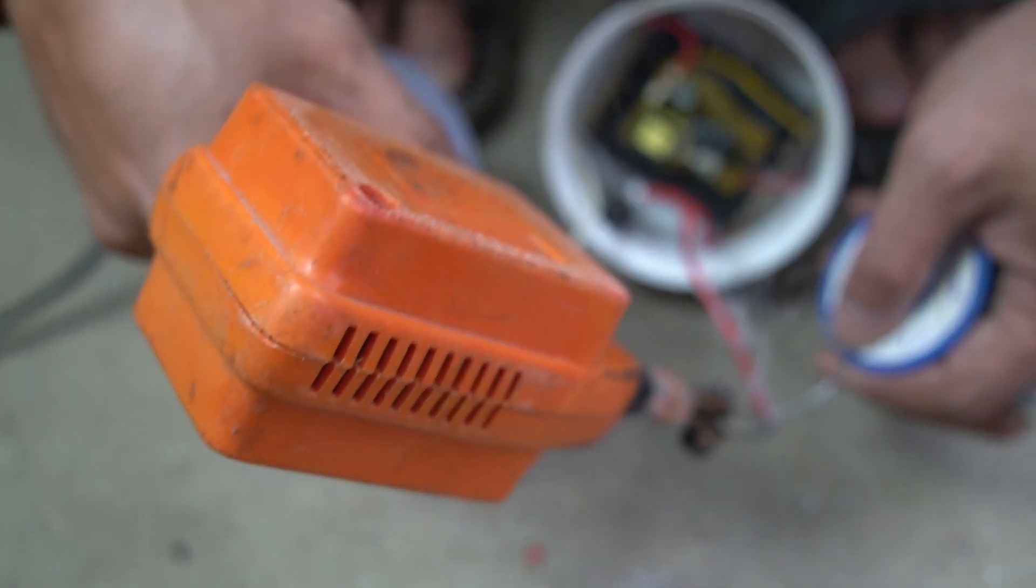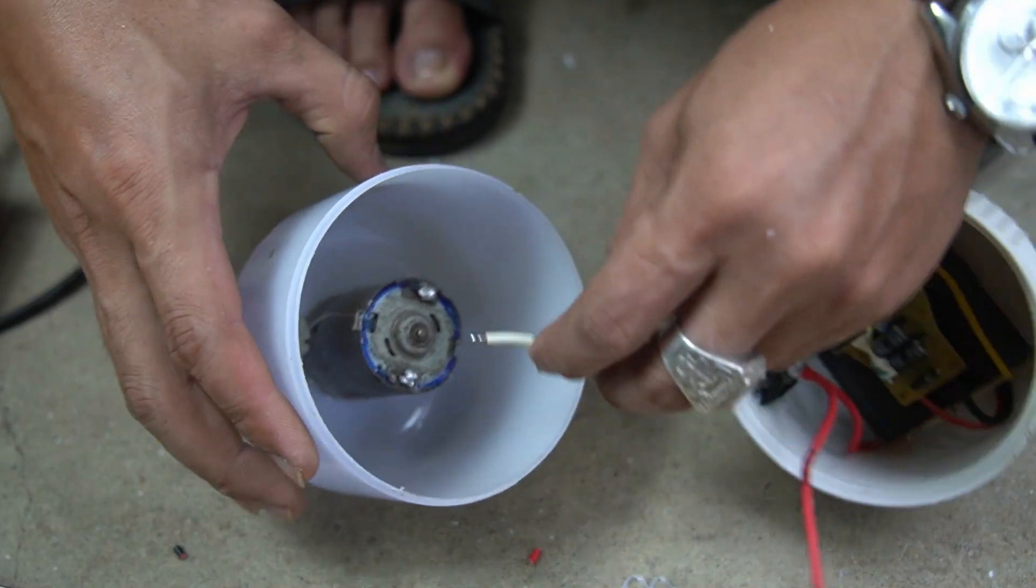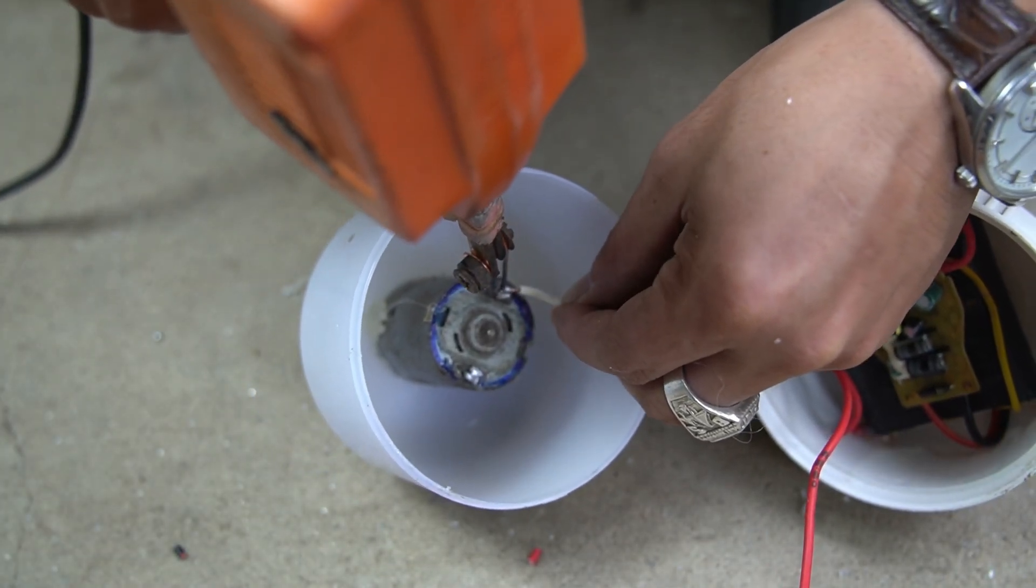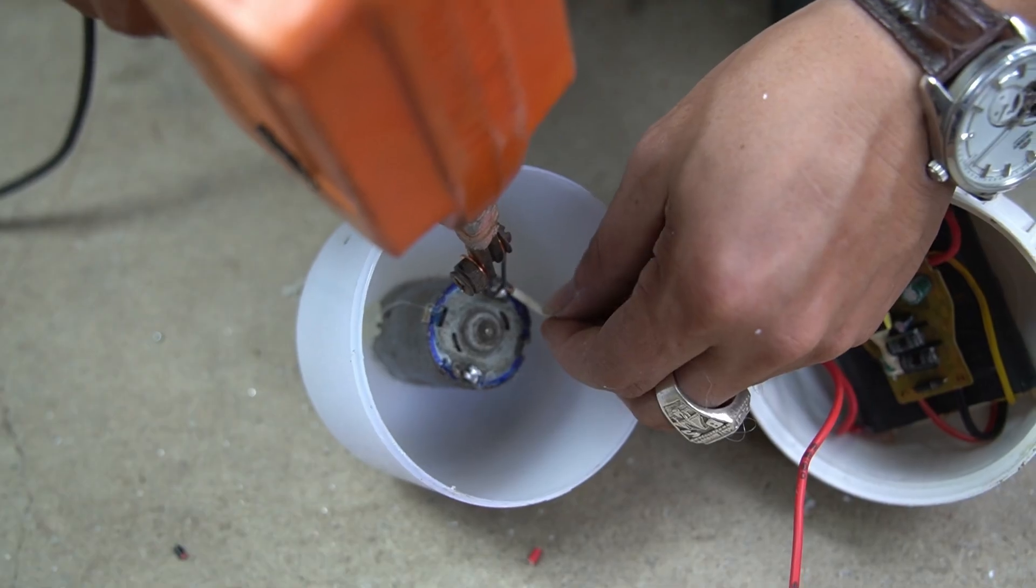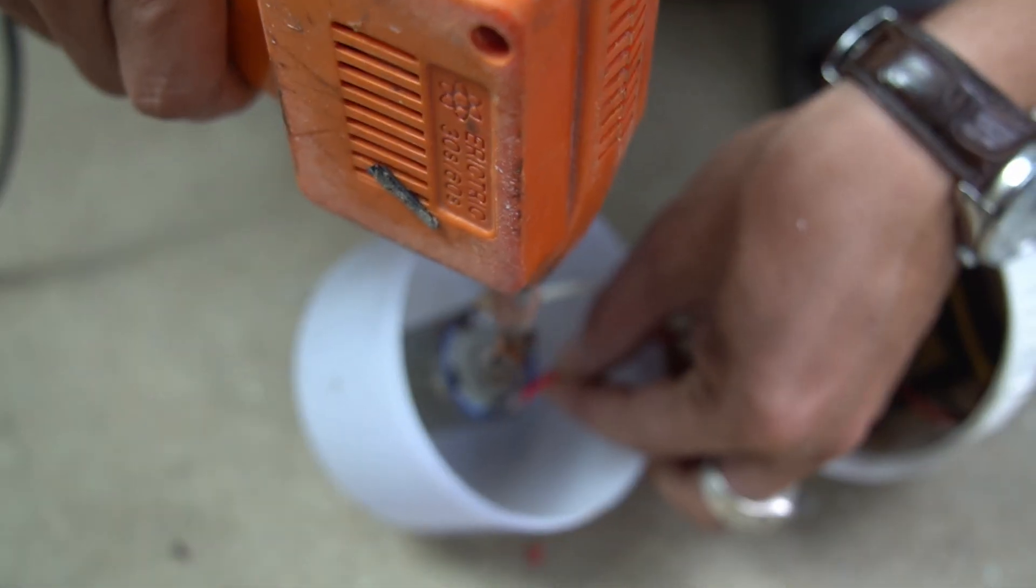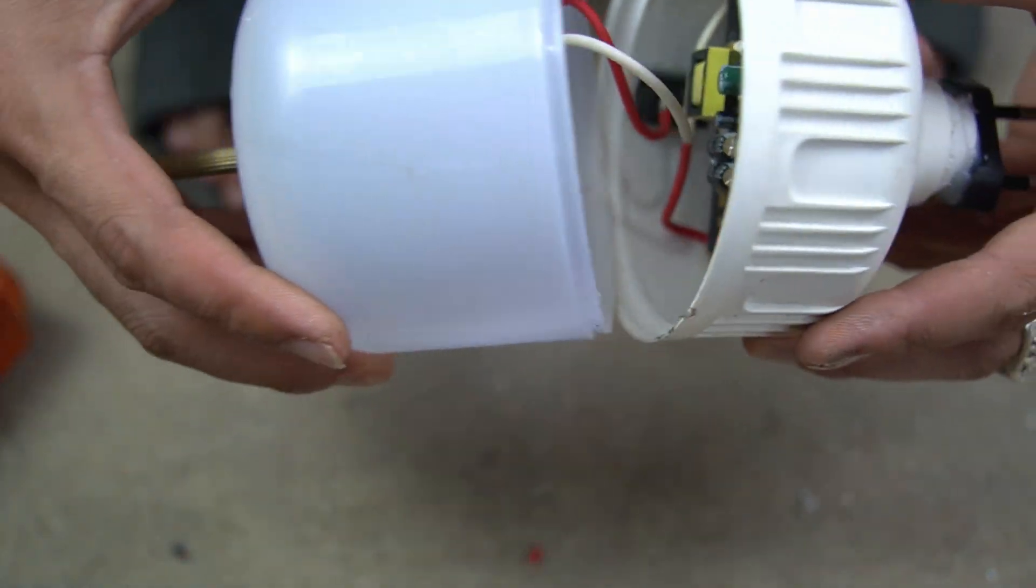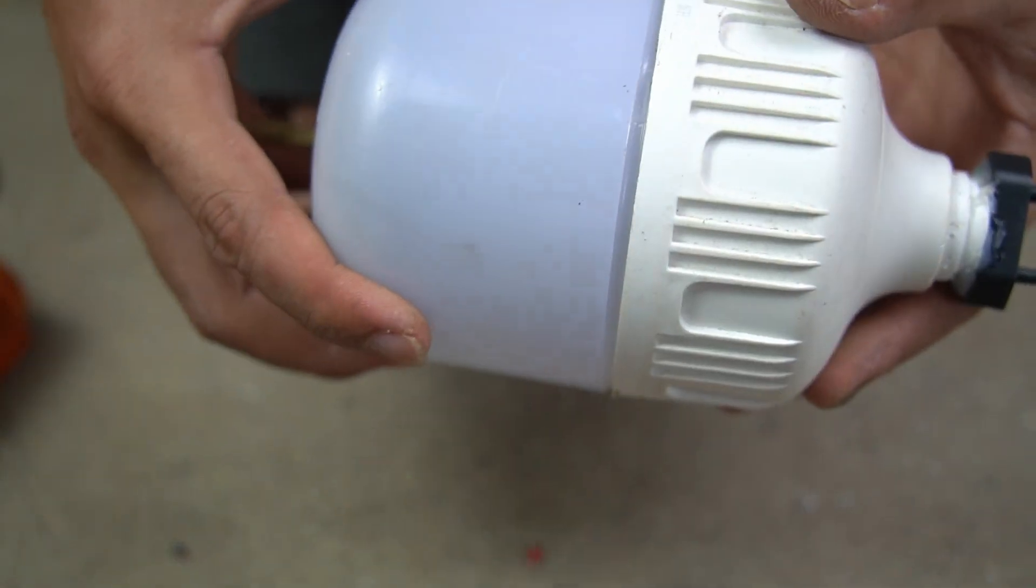First, I smear some tin on the end of the wire. Once done, I will install the bulb cap onto the bulb housing.